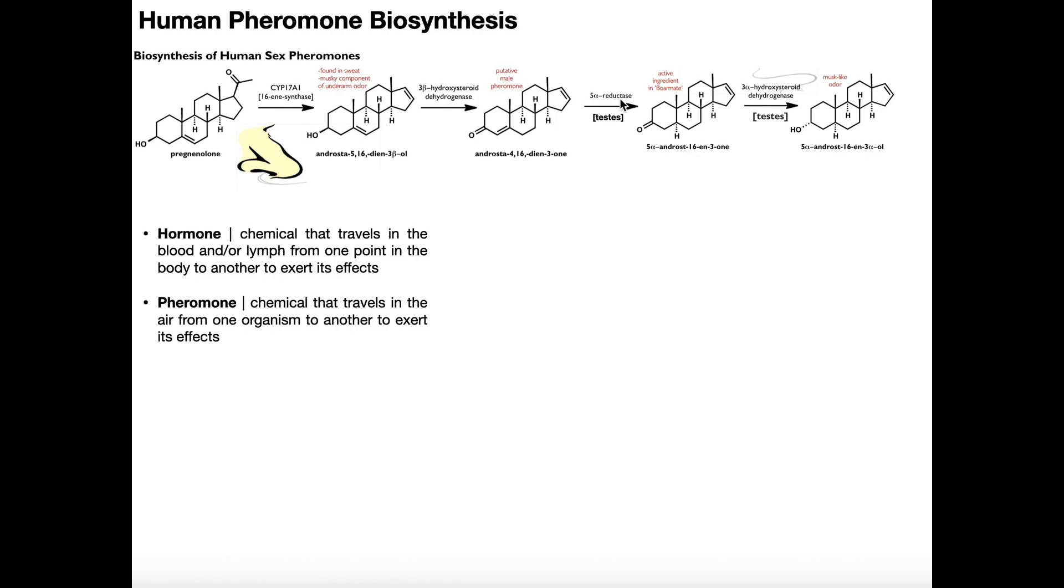Now, normally what this enzyme does in the context of steroidogenesis is it takes testosterone and converts it into the far more potent dihydrotestosterone. So it does the same reaction here. It's going to take this double bond right here, androstadienone, and it's going to reduce it to an alkane.